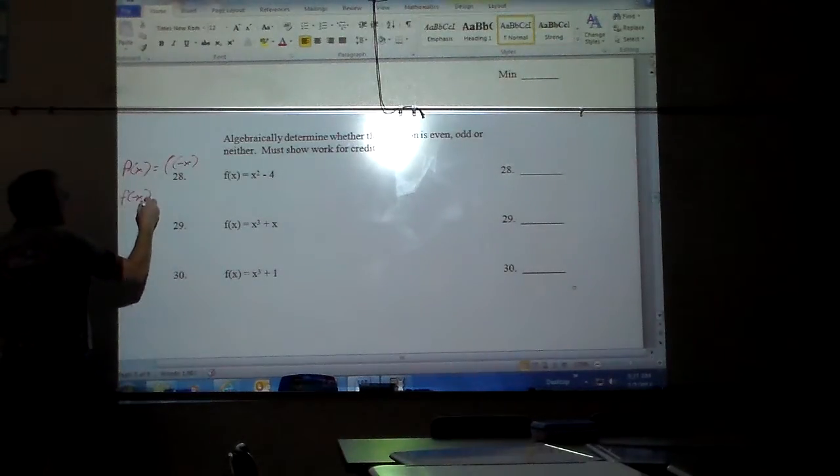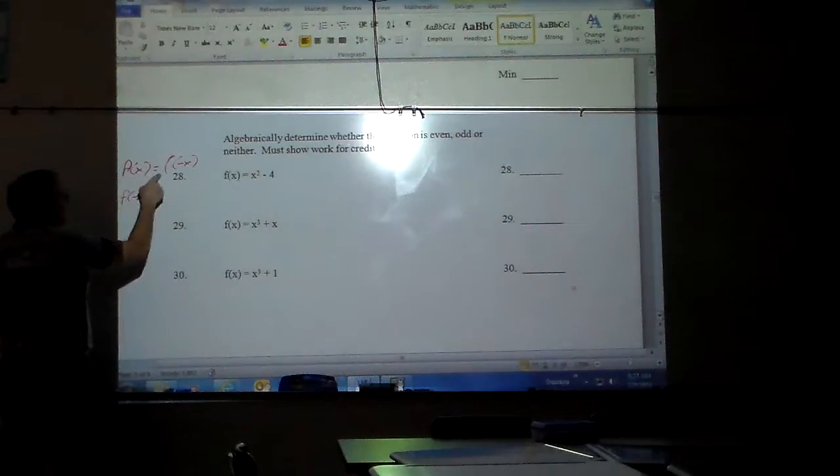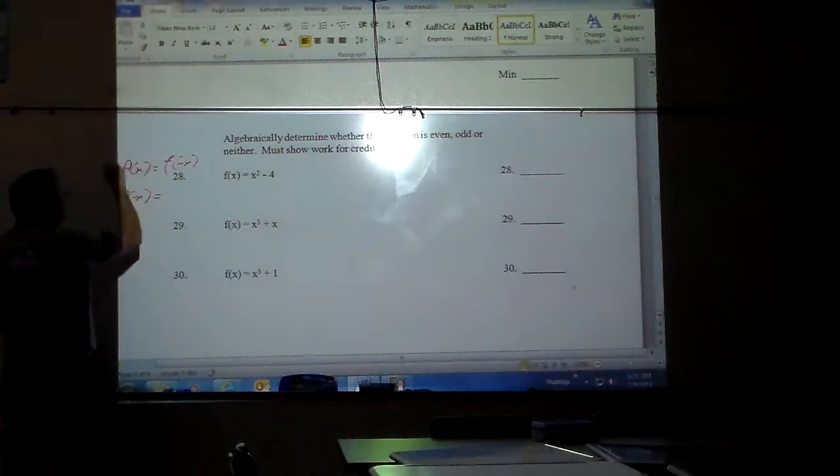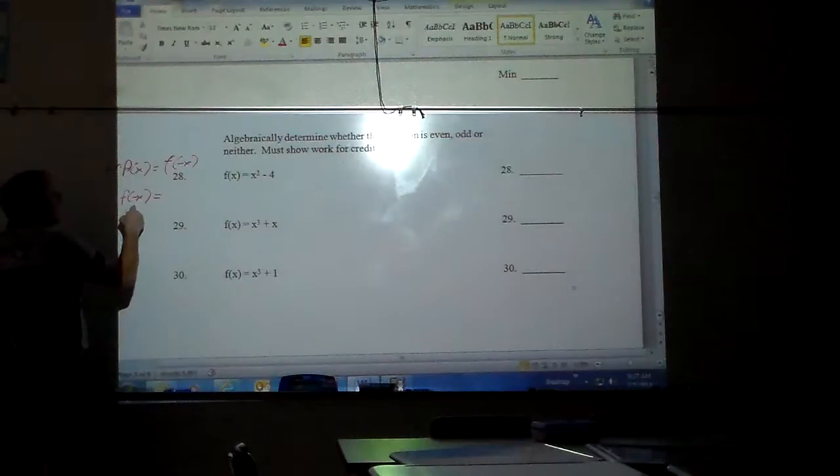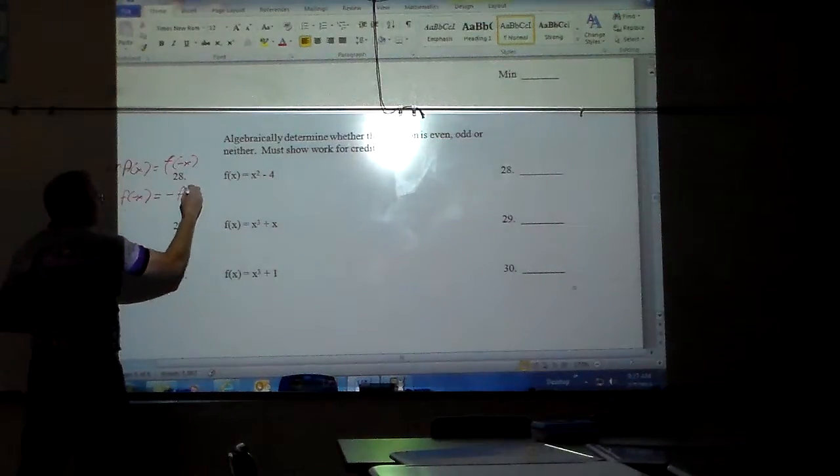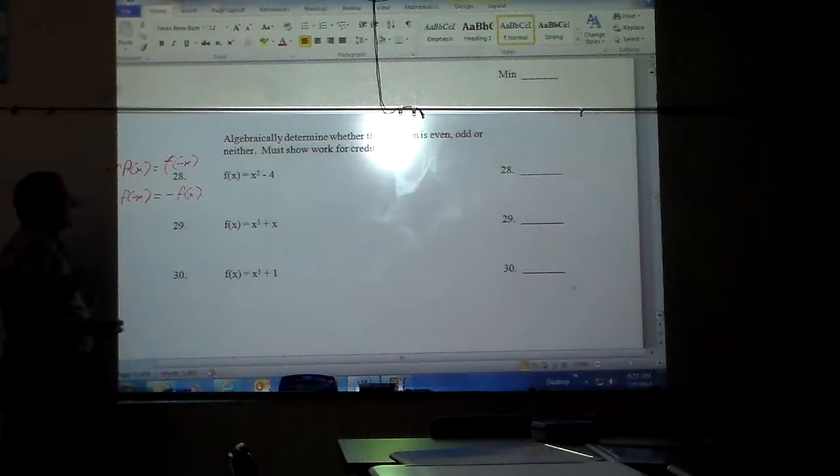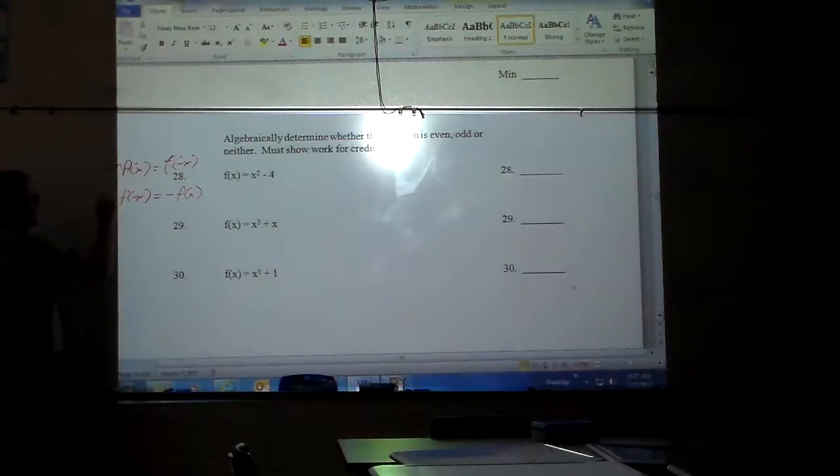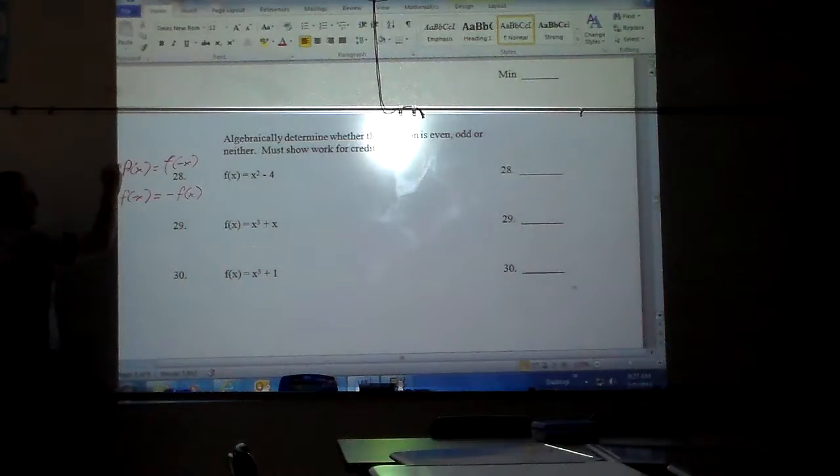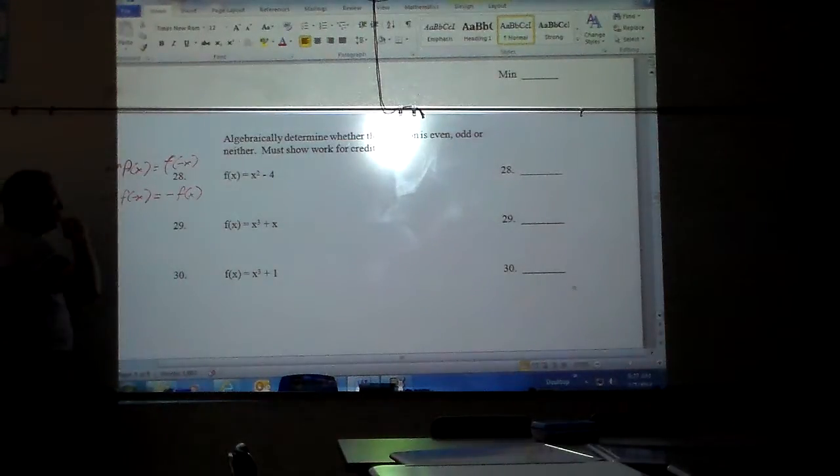And here's what we know. If f of negative x equals f of x, exactly the same, then it's considered even. If you plug in a negative x and you get basically the complete opposite, all the signs change, it is considered to be odd. If it doesn't do either one of those things, then it is considered to be neither.